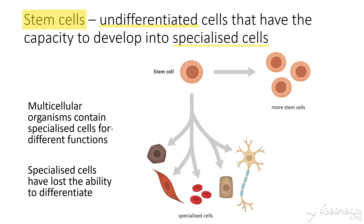Multiple cellular organisms contain specialised cells for different functions. The whole point of specialising your cells is so that each cell can perform different functions, rather than one cell doing everything itself. It's more efficient because cells are adapted to different functions. Neurons have long cellular bodies called axons for sending signals, while red blood cells have a dip in the middle to carry more oxygen.